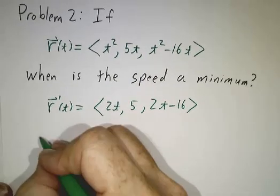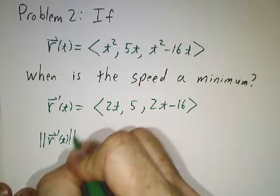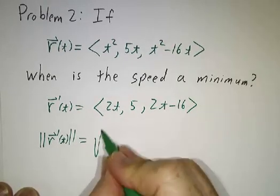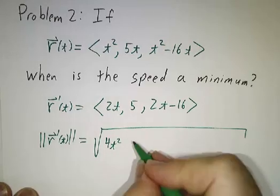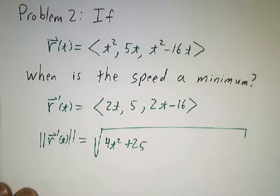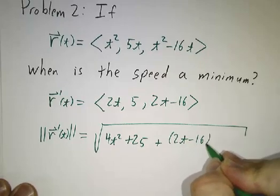And we have to figure out our speed. And that's the square root of a big mess: 4t squared plus 25 plus 2t minus 16 squared.